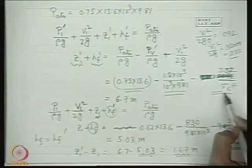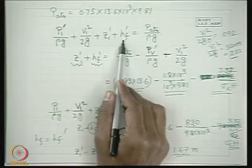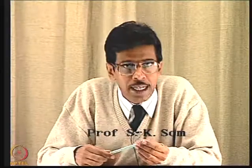This demonstrates how we use the cavitation parameter σ_c and Bernoulli's equation between the pump impeller inlet and the sump free surface to determine the maximum allowable height above the sump at which the pump must be placed — ensuring the minimum pressure at the impeller inlet remains above the vapor pressure of the working fluid at the working temperature. Thank you.